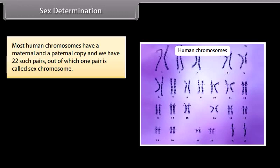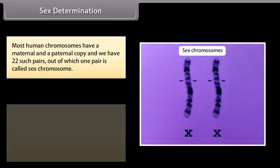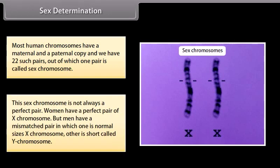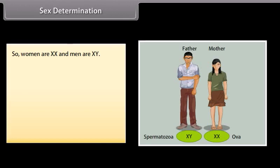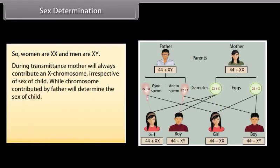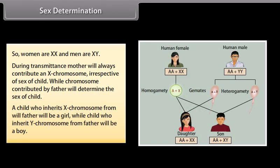Sex determination. Most human chromosomes have a maternal and a paternal copy, and we have 22 such pairs, out of which one pair is called sex chromosome. This sex chromosome is not always a perfect pair. Women have a perfect pair of X chromosome, but men have a mismatched pair in which one is normal size X chromosome, other is short called Y chromosome. So, women are XX and men are XY. During transmittance, mother will always contribute an X chromosome irrespective of sex of child, while chromosome contributed by father will determine the sex of child. A child who inherits X chromosome from father will be a girl, while the child who inherits Y chromosome from father will be a boy.